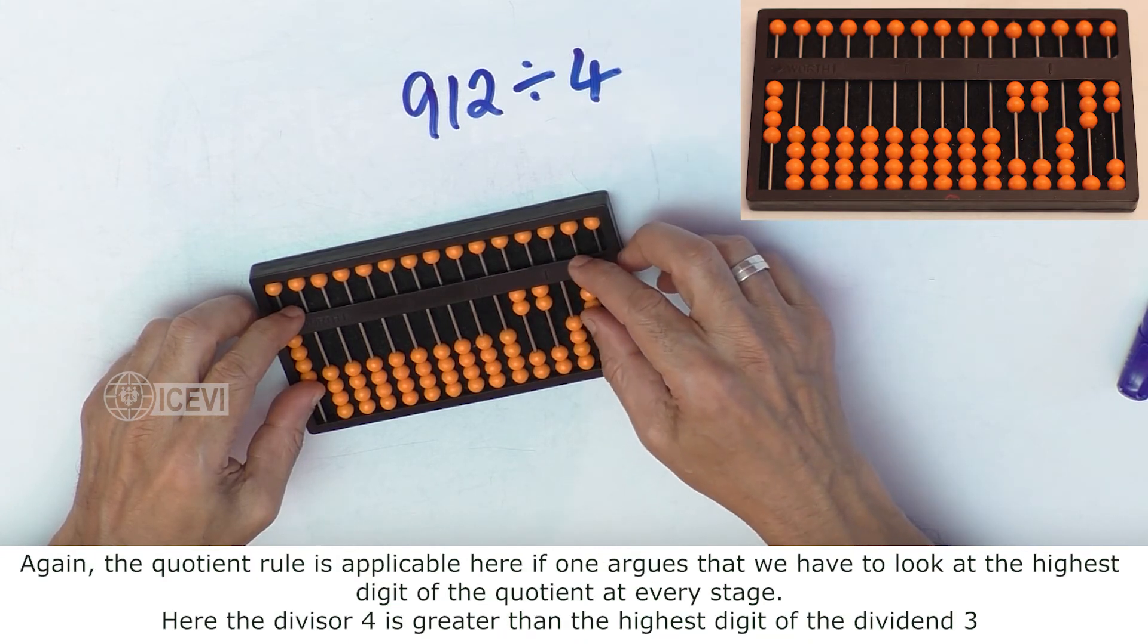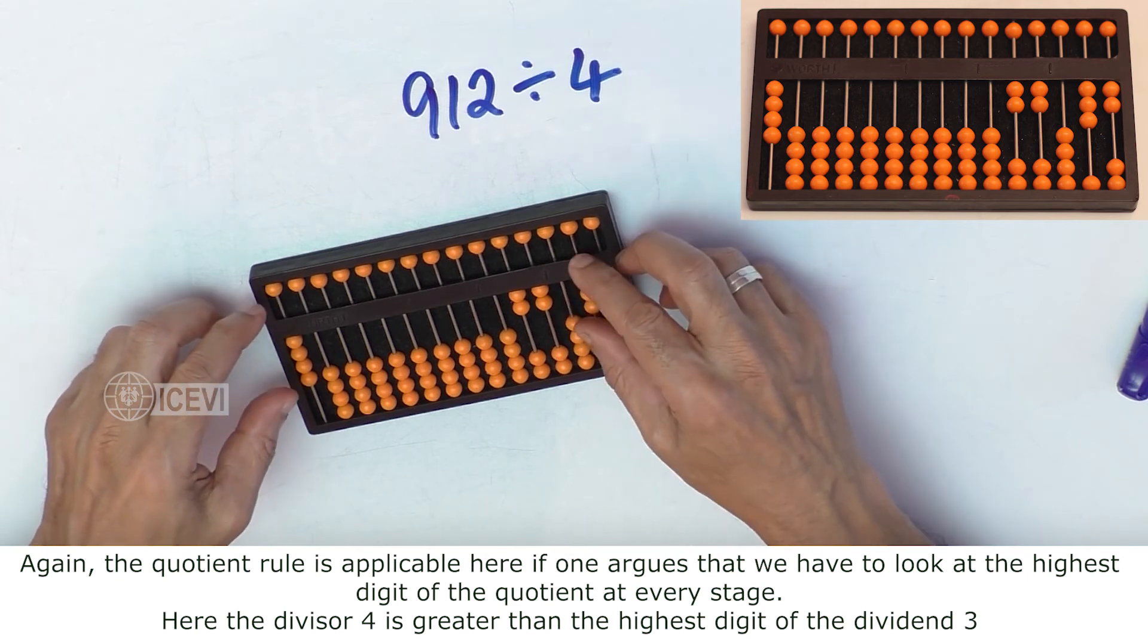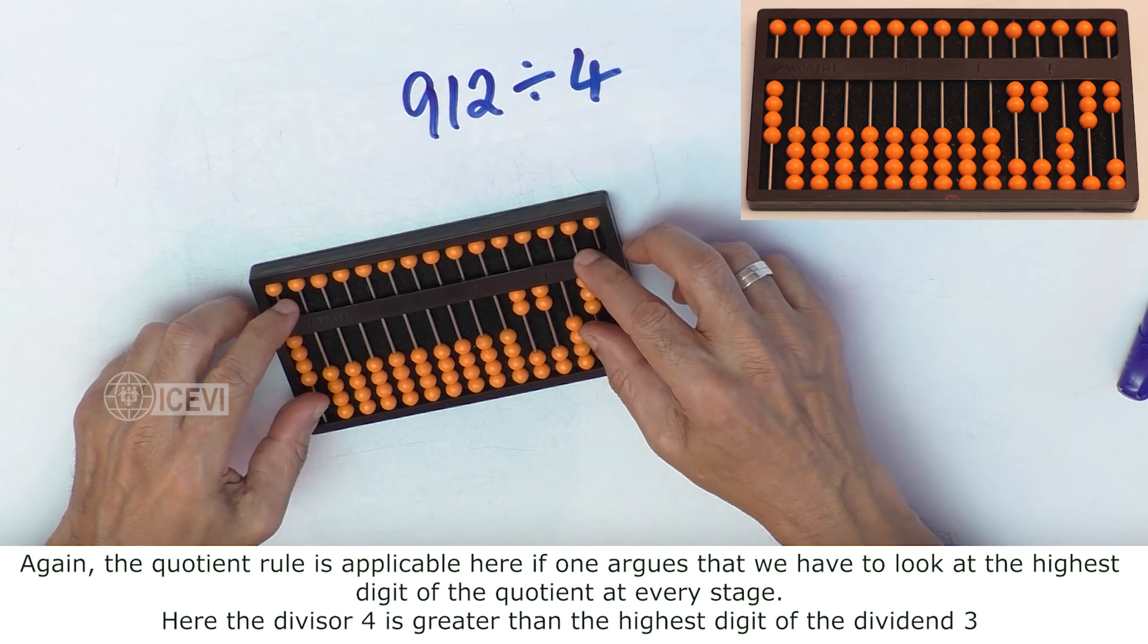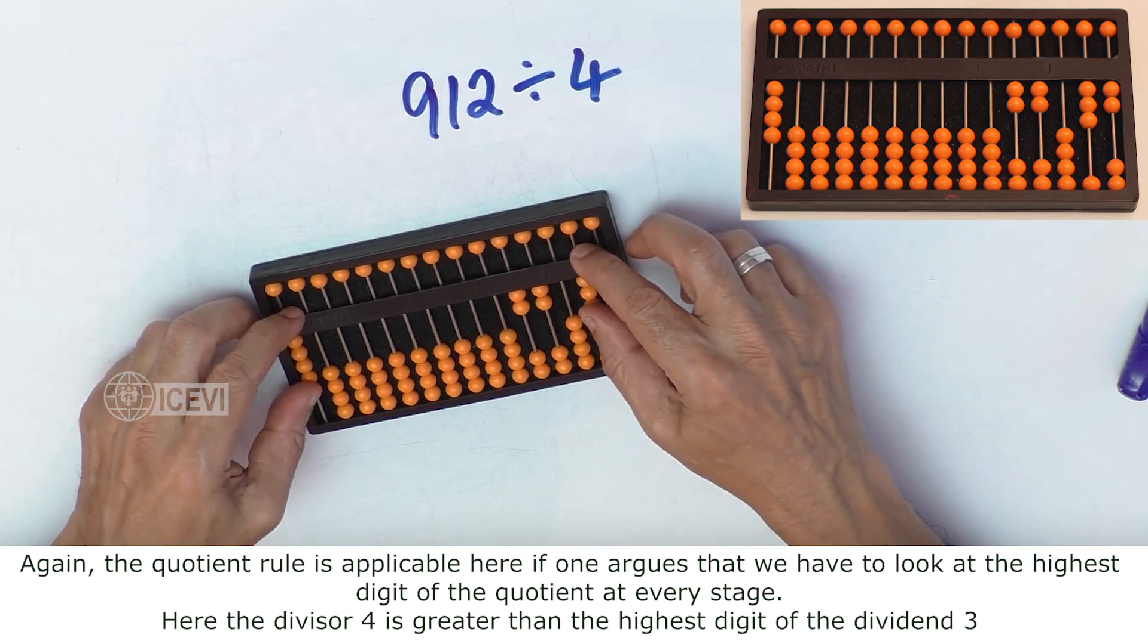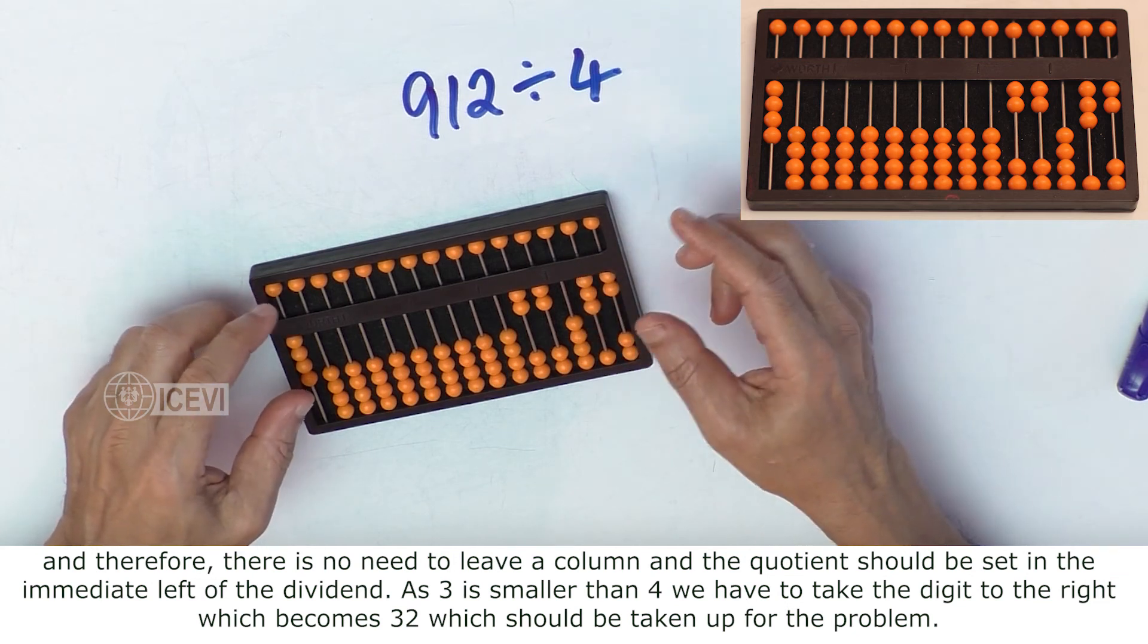Now again the quotient rule is applicable here if one argues that we have to look at the highest digit of the quotient at every stage. Here the divisor 4 is greater than the highest digit of the dividend 3, and therefore there is no need to leave a column.